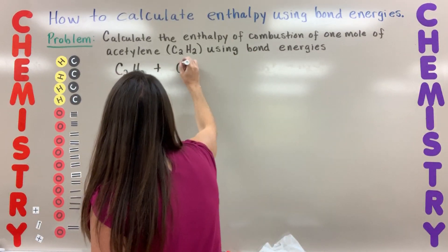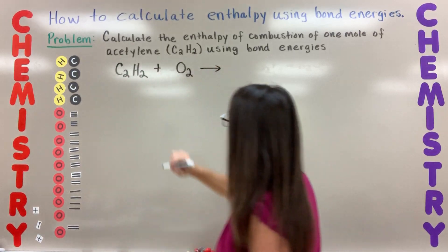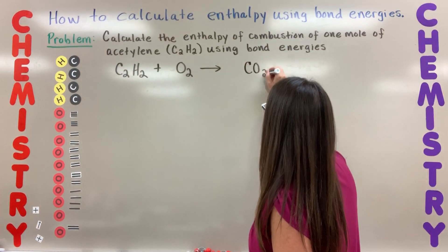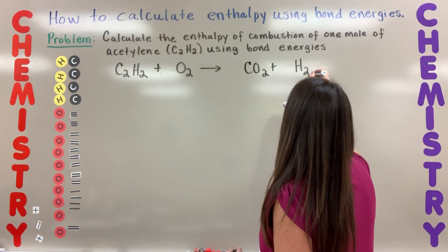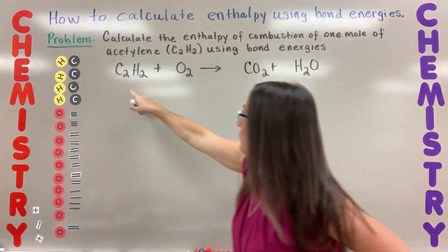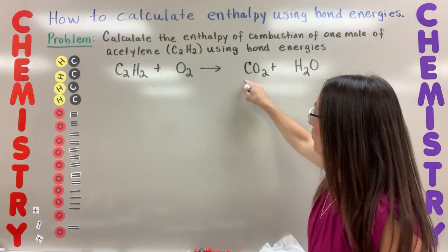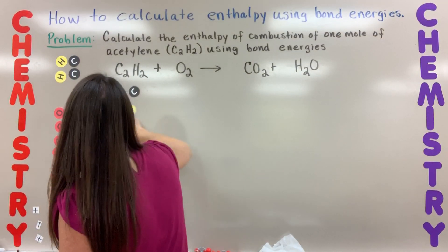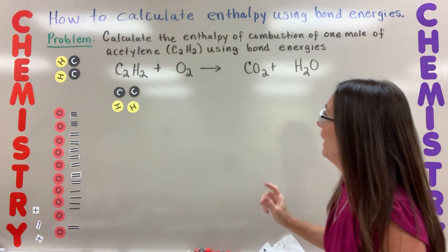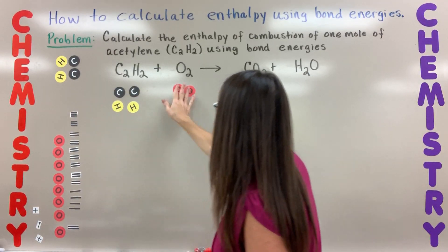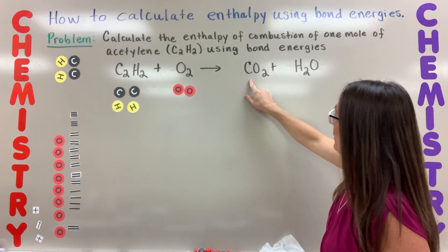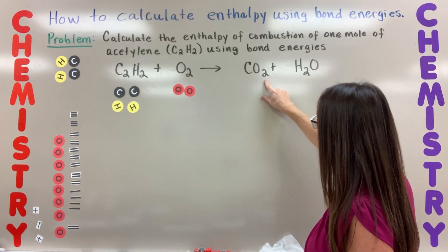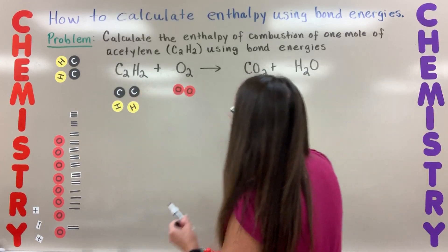We have a reactant which in this case is acetylene, and it says it's burning in air — that means we're going to combust it and add oxygen. The products of a hydrocarbon combustion are carbon dioxide and water. Right now it's not balanced: there are two carbons on the left but only one on the right. I'll make a little list of atoms — two carbon, two hydrogen, two oxygen on the left.